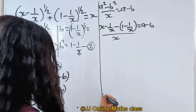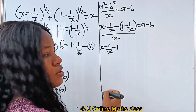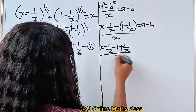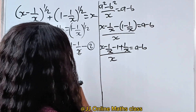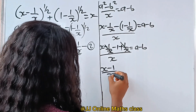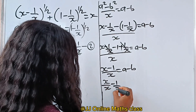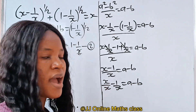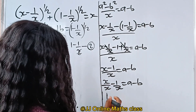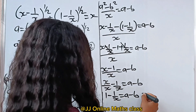Now, expanding the numerator: x minus 1 over x minus times 1 gives minus 1, and minus times minus gives plus 1 over x. So minus 1 over x plus 1 over x is 0, and we are left with x minus 1 divided by x, which equals a minus b. This can be written as 1 minus 1 over x equals a minus b. Let's call this equation 4.